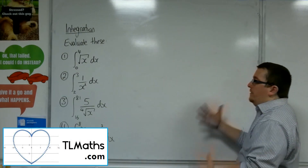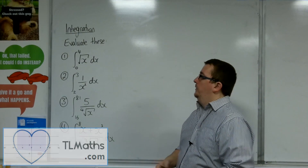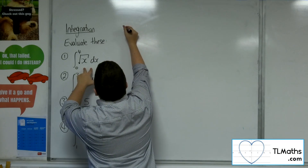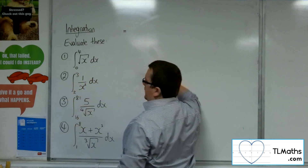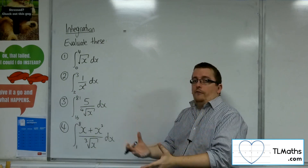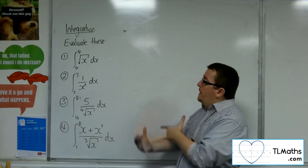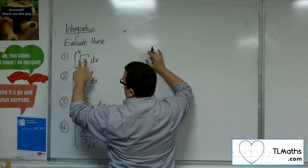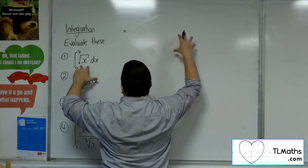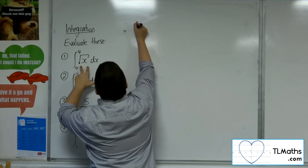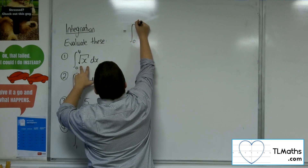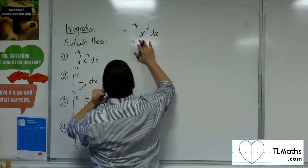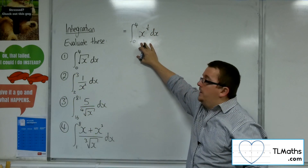In this video we're going to evaluate these four definite integrals. So let's go straight in with number one. The first thing I want to do — with each of these in fact — is to make sure it's in a format that I can integrate. So you want to prepare your vegetables first. I want to write that as ax to the something, so this will be x to the half dx. I need to rewrite it like that first before I can integrate.